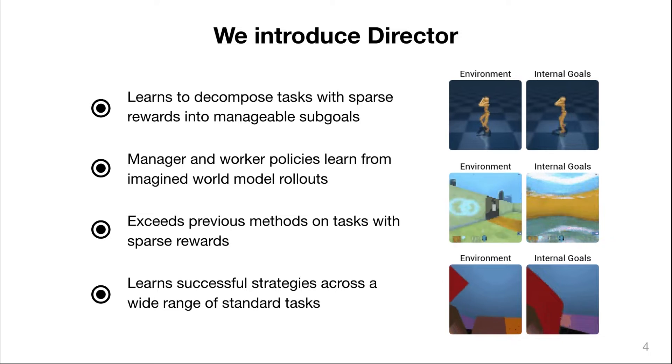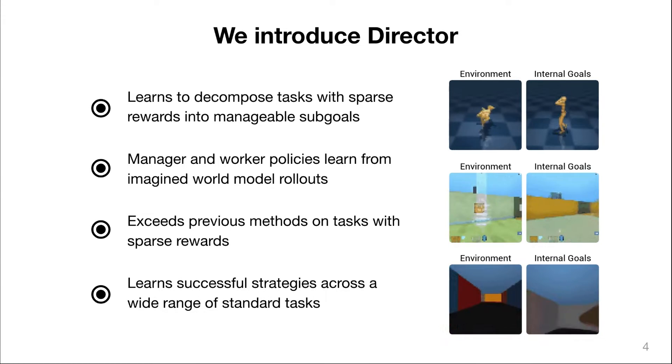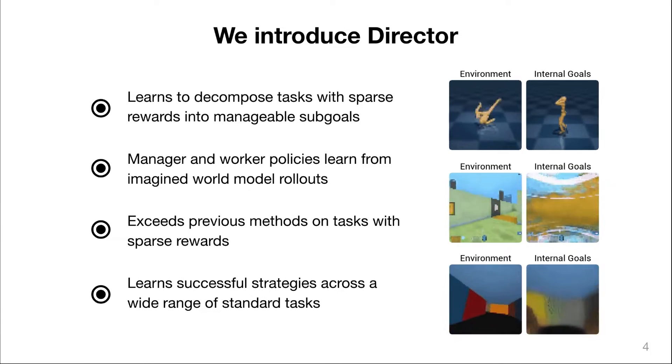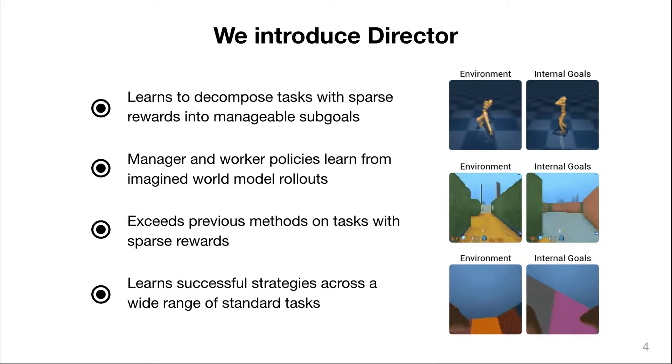We introduce Director. Director is a hierarchical reinforcement learning agent that automatically learns to decompose tasks with sparse rewards into manageable sub-goals. For that, it learns a manager and a worker policy that are both trained from imagined rollouts of a learned world model. Director exceeds previous methods on tasks with very sparse rewards, including complex 3D environments and high-dimensional continuous control. Director also learns successful strategies across a wide range of standard tasks with dense rewards, showing its general applicability.